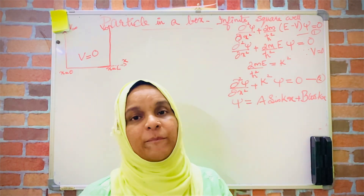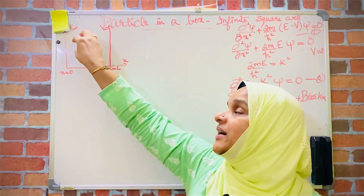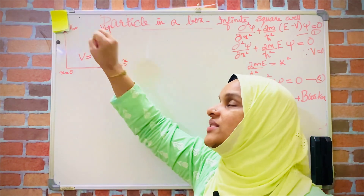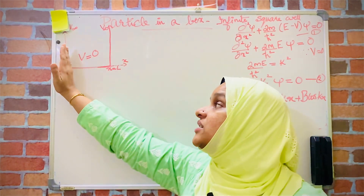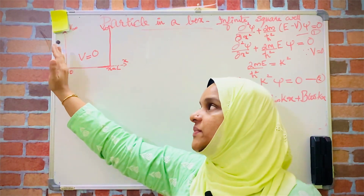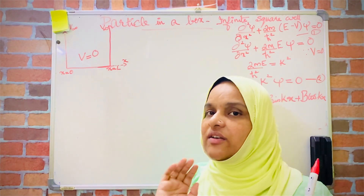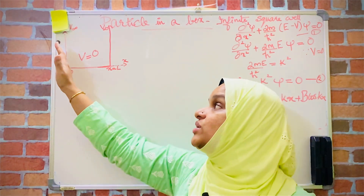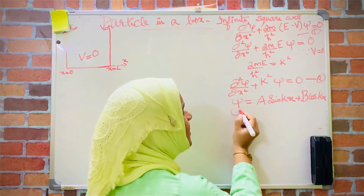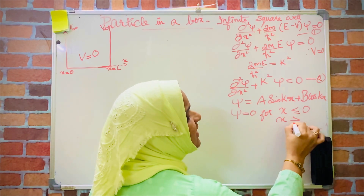For finding the constants A and B, we will apply the boundary conditions. The boundaries are x=0 and x=L. Since the particle is inside the well, the wave function ψ will have a value only inside the well. The particle will be absent at x<0 and at x>L, meaning the wave function ψ will be equal to zero before x=0 and beyond x=L. The boundary condition is therefore ψ=0 for x≤0 and x≥L.